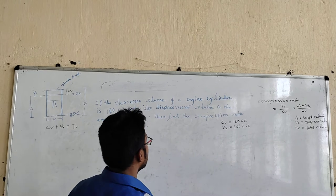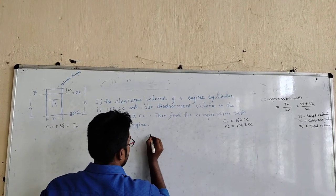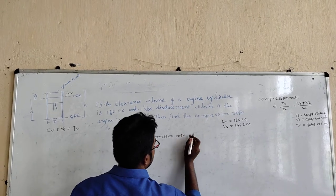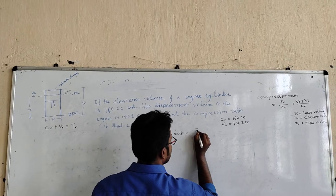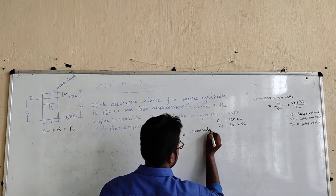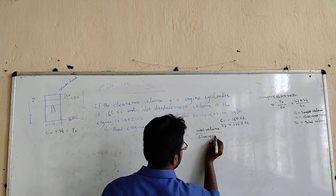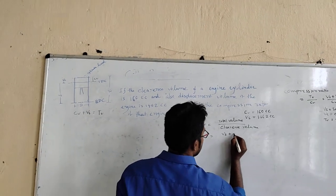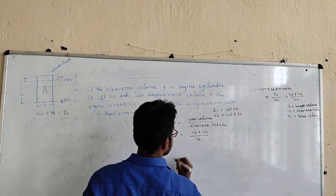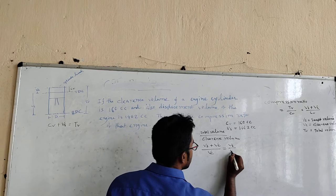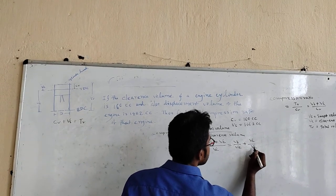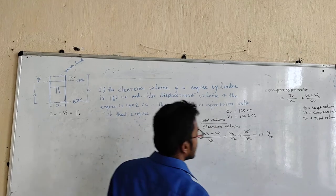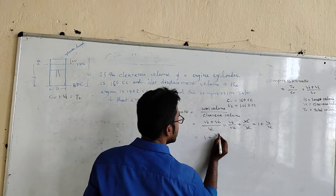We have to find the compression ratio. Compression ratio is equal to total volume VT by clearance volume VC. The total volume is VS plus VC by VC, which equals 1 plus VS by VC.